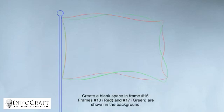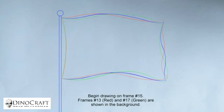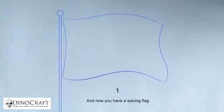Return to frame 13 and show frame 17 in green which is actually drawing number 1. Create a blank space in frame 15. Frames 13 and 17 are shown in the background. Begin drawing on frame 15. And now you have a waving flag.